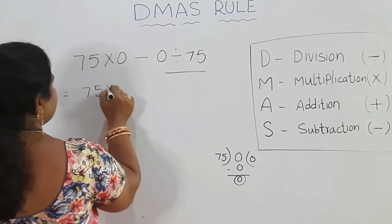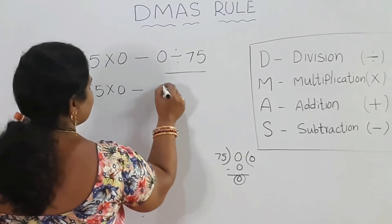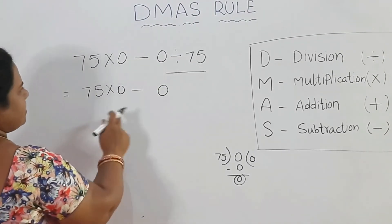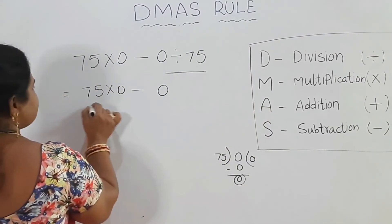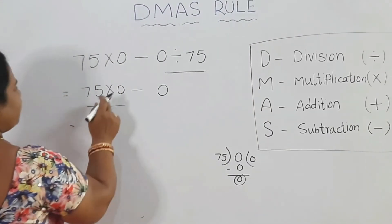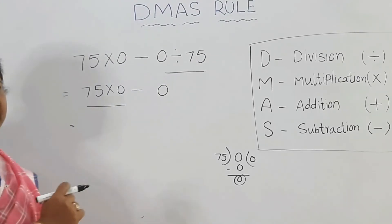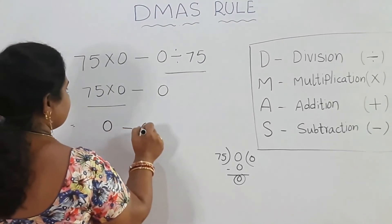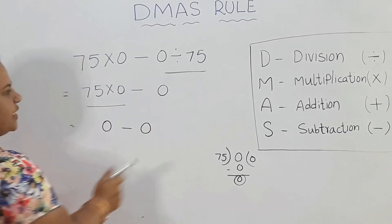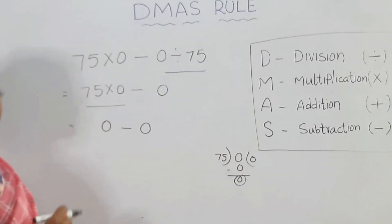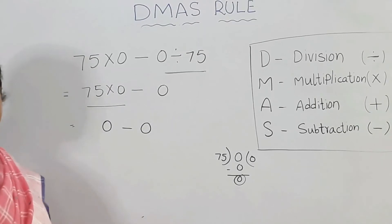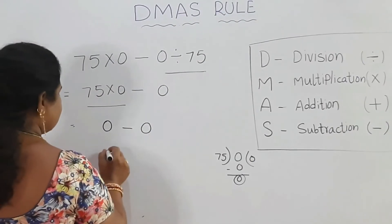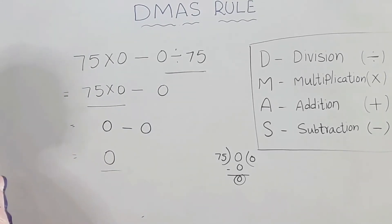So we have 75 into 0 minus 0. Next, multiplication: 75 into 0 — anything into 0 is equal to 0. So we have 0 minus 0. Next, addition — there is no addition here. Then subtraction: 0 minus 0 is 0. So the answer is 0.